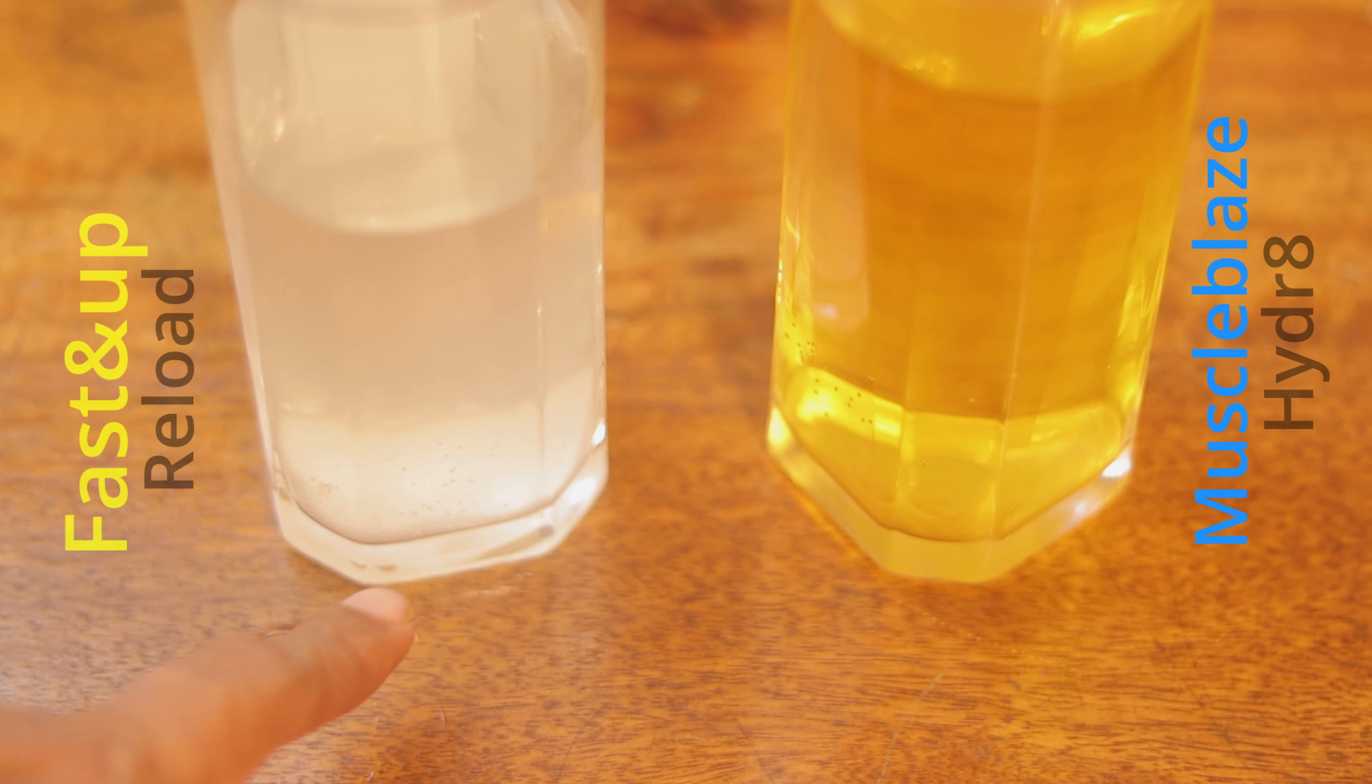Besides, I also noticed that once dissolved, Fast Up leaves a precipitate residue at the bottom of the glass. While Muscle Blaze is totally dissolved with no residue at the bottom. So Muscle Blaze pulls ahead here.